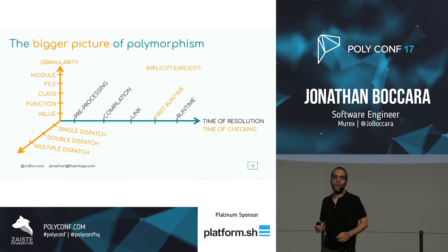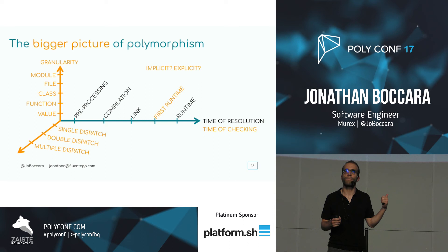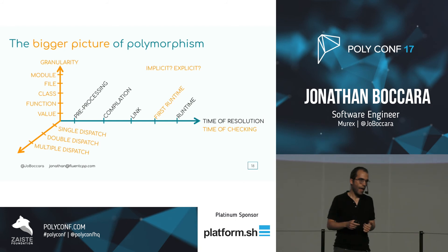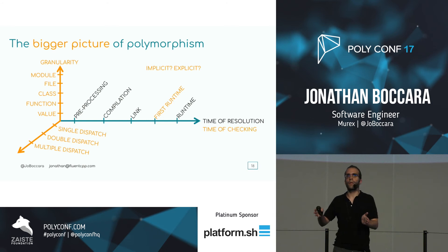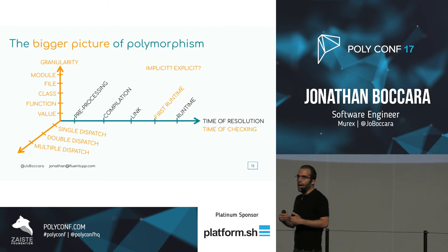I want you to do two things. First, think about your language and where it has access to in that polymorphism space — some languages have access to some places in that space. Second, reach out and let me know what you found. I've presented just a subset of C++ and I probably don't know your language. Let me know what you found — I'll put it together and share it.